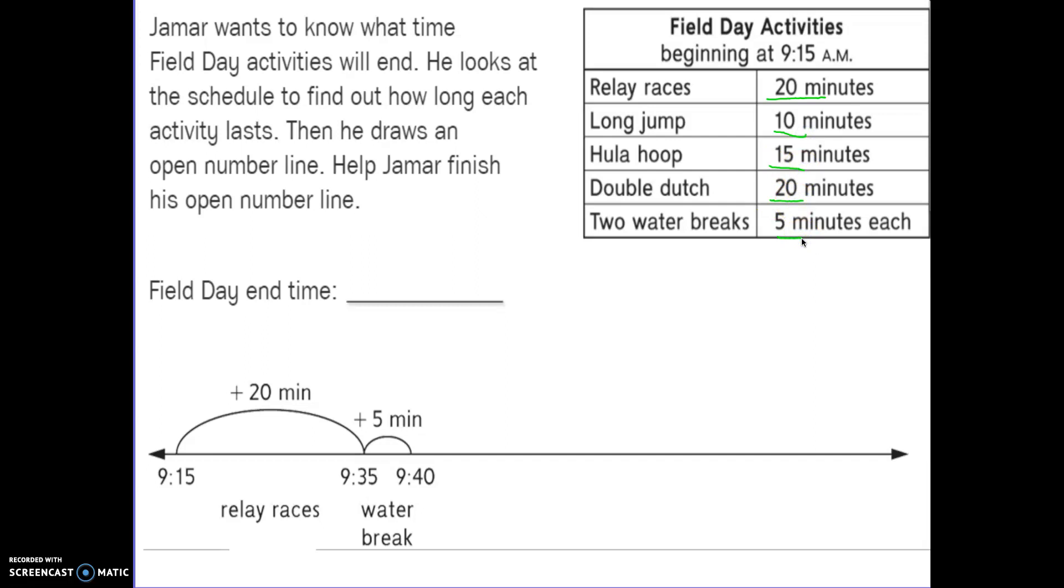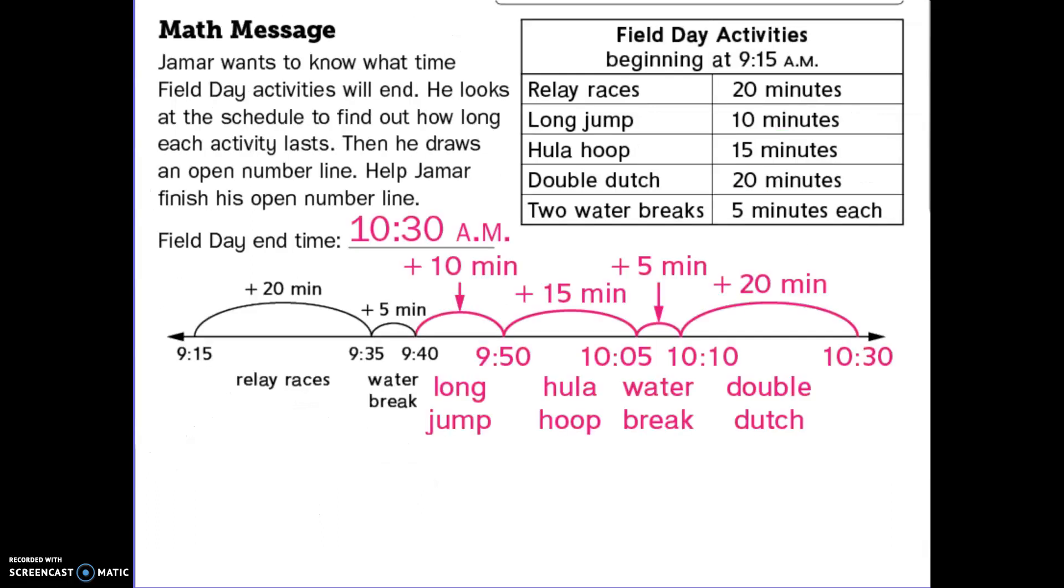So what do we know? The activities are relay races, long jump, hula hoop, double dutch, and there's two water breaks. We also know that it begins at 9:15. Our chart tells us how long each of the events will last. We started at 9:15 and the relay races are 20 minutes, so that brought me to 9:35. Then maybe I want to put a water break in there, that's five minutes, so that took me to 9:40.